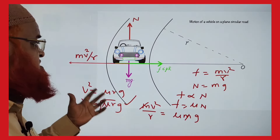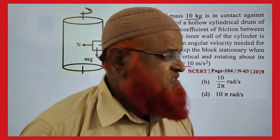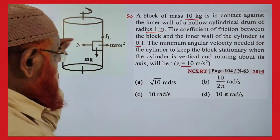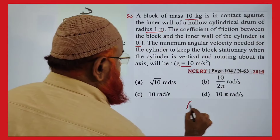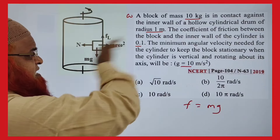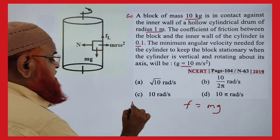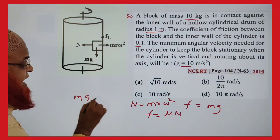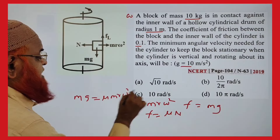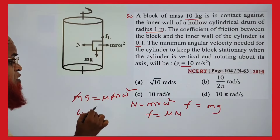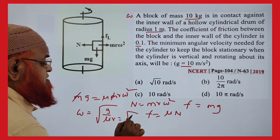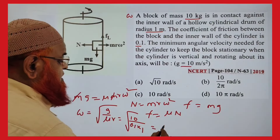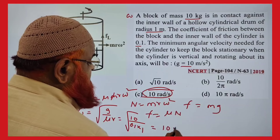Revisiting the 2019 PYQ rotating drum: the block is counterbalanced by friction (mg downward) and centrifugal force. Normal reaction N = mr×omega². Setting mg = mu×mr×omega², masses cancel. Omega = √(g / mu×r) = √(10 / 0.1×1) = 10 radians per second. Answer is option C.